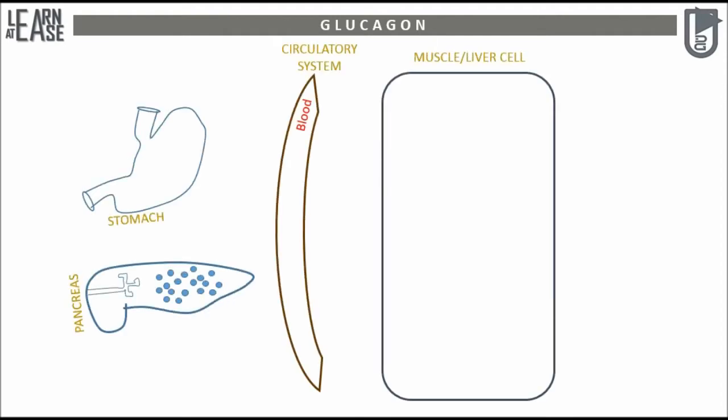Essential organs of the body required to understand the production of glucagon and its function include: stomach, pancreas, circulatory system, muscle, liver, and adipose tissue.